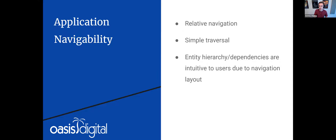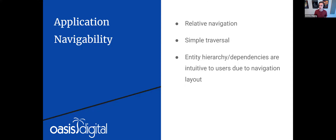Relative navigation is another huge thing I see applications not making use of enough. Whenever navigating through your application, a lot of people recreate the entire URL from root, replugging in all the data over and over. Whereas if you just make use of relative navigation, it's as simple as using change directory with dot slashes and dot dot slashes for local directory navigation inside your OS — it makes everything quite a bit easier.